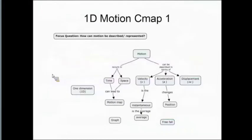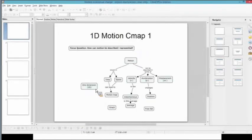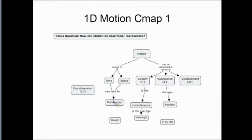Here's an example of their first map — this is like their pre-test. I had motion, time, space, velocity, and acceleration all on there in rudimentary form. I also had all these other concepts — one dimension, motion map, instantaneous, average, graph, position, free fall — on the side in what I call the parking lot. So I asked them: make some meaning of this. What do these terms mean to you? Can you relate them? And so this was his first try at it.